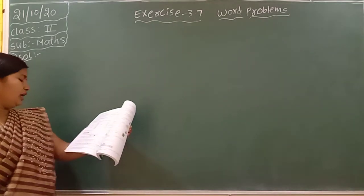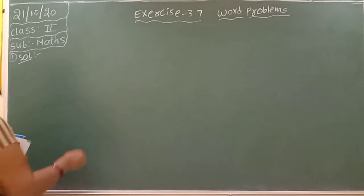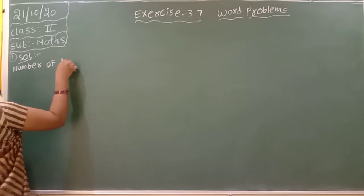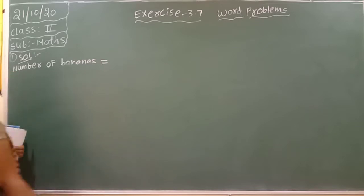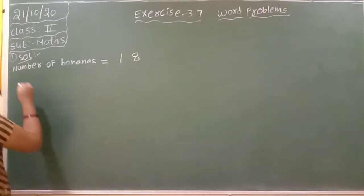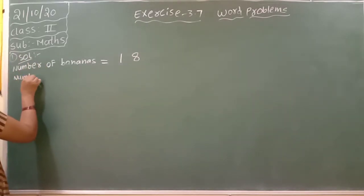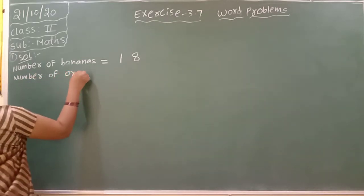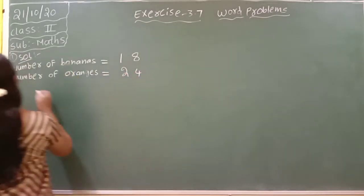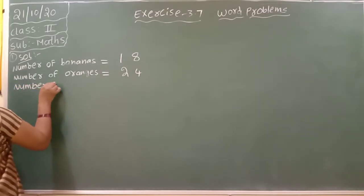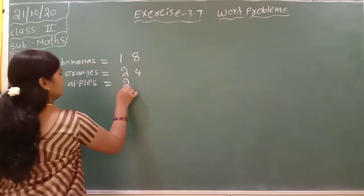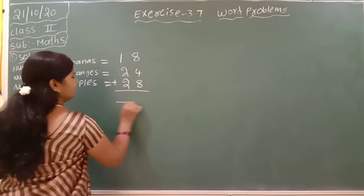First we have to write down: Mommy brought 18 bananas, so write 'number of bananas = 18'. Next step: number of oranges = 24. After that, number of apples = 28. Keep the addition symbol — don't forget this. If you are keeping this symbol, it means you have to add all the numbers.